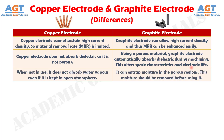Number 8: when not in use, copper electrode does not absorb water vapor even if it is kept in open atmosphere. Whereas, graphite electrode can entrap moisture in the porous regions. This moisture should be removed before using it.